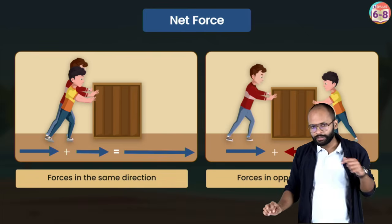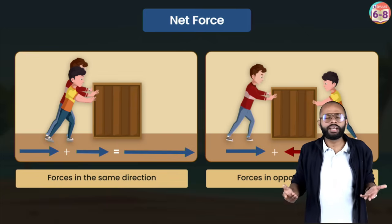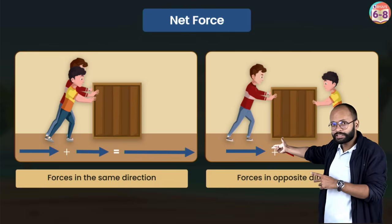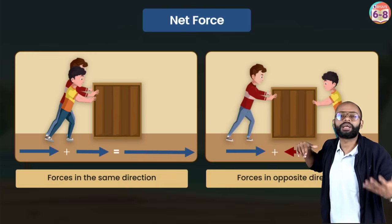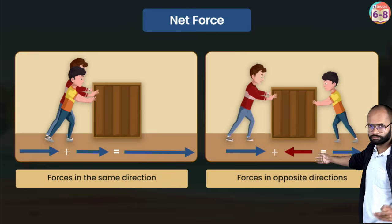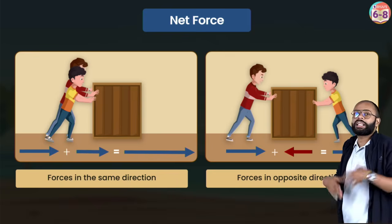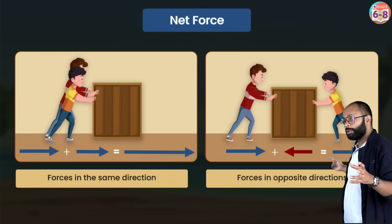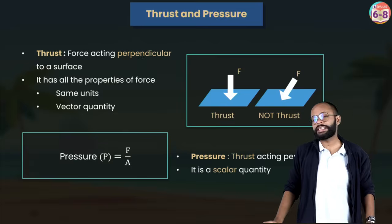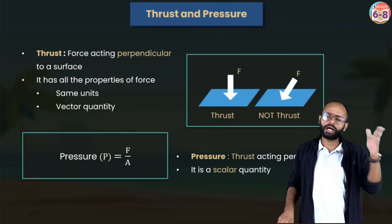Net force is the total resultant force on a body. If two forces act in the same direction, they add up. If they act in opposite directions, you subtract; the net force will be in the direction of the larger force. That's the summary of net force.